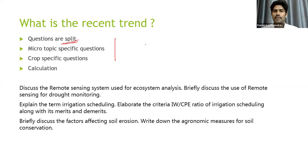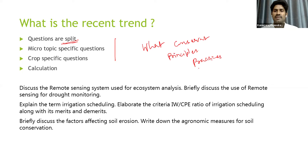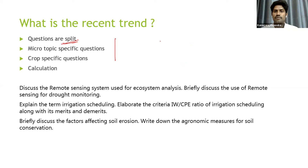For example, if they ask: 'What do you mean by conservation agriculture? Discuss the principles of conservation agriculture and write about the various practices.' When questions are split this way, we get a clear idea of how to structure the answer — first define conservation agriculture, then discuss the principles one by one, then discuss the practices. Sometimes they also ask questions combining two different topics, such as combining micro irrigation and drainage within a single irrigation question.